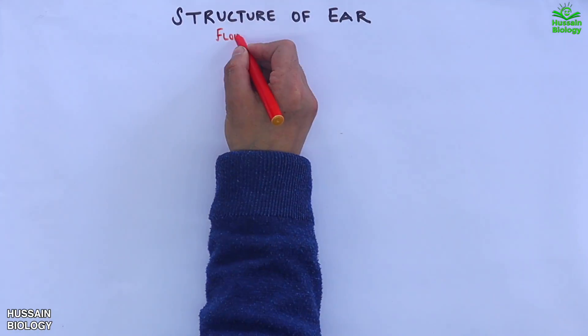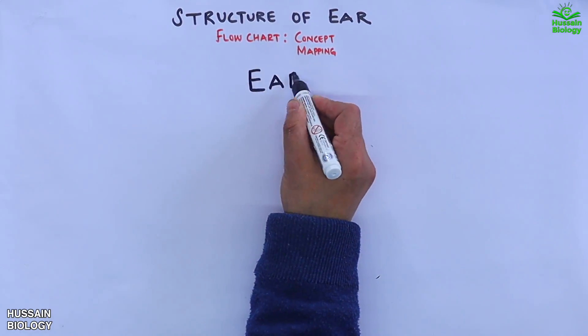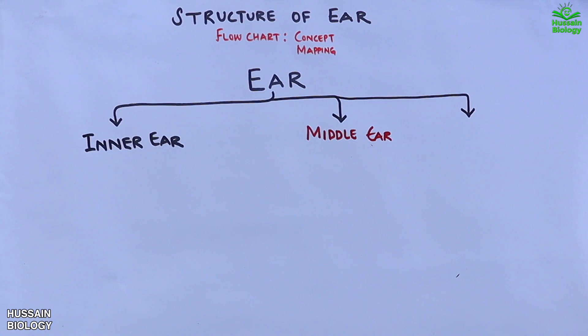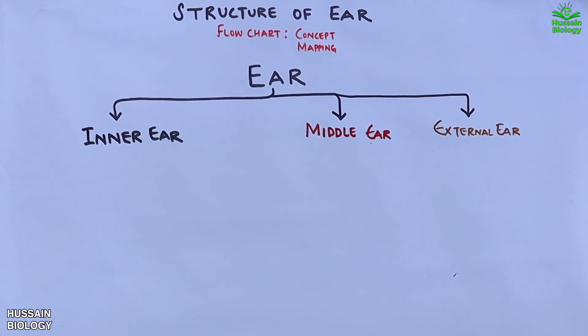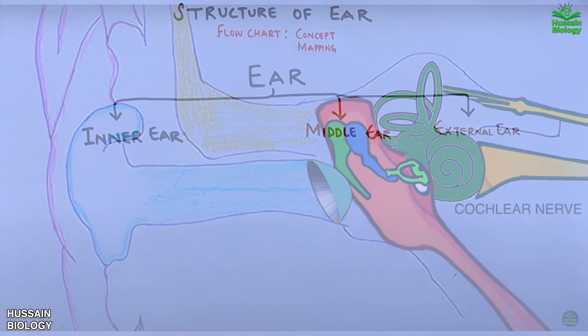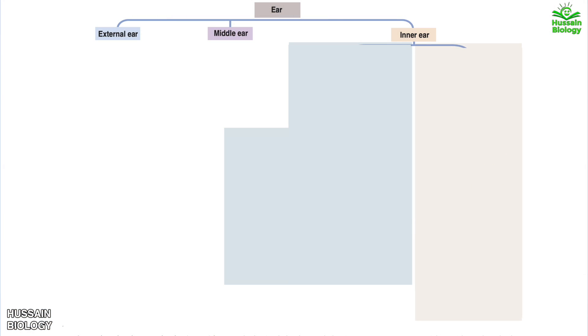In this video we are going to discuss the structure of ear through flow charts, where we will discuss the structure of inner ear, middle ear, and external ear. This will help us understand the structure of ear visually in upcoming videos. First, let's start with the inner ear.